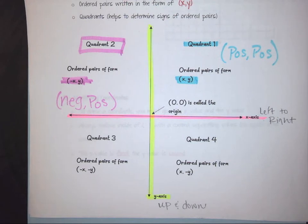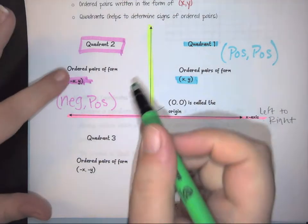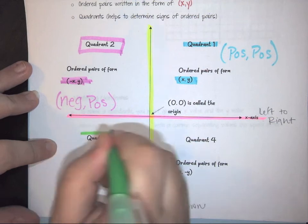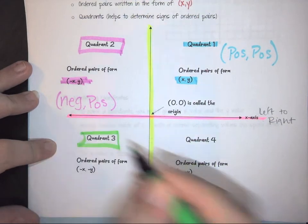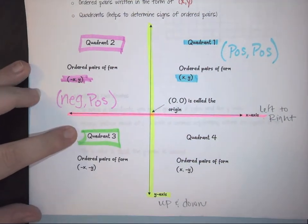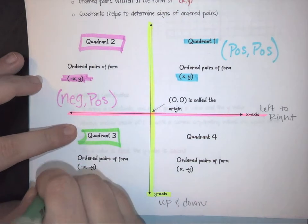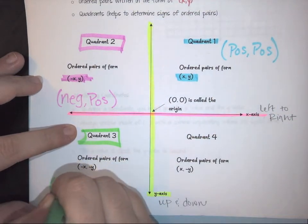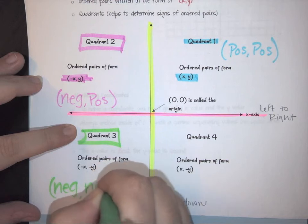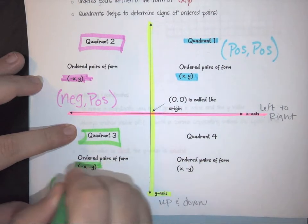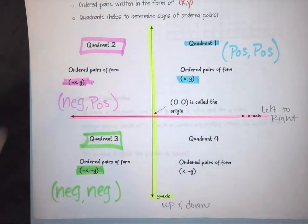Continuing to move through, we shift down and we've got quadrant three. Quadrant three is the exact opposite of quadrant one, so it would be the negative-negative quadrant, and its coordinate pair looks like (negative x, negative y).